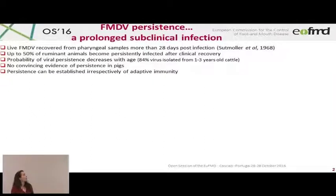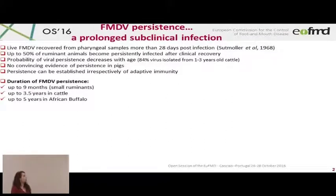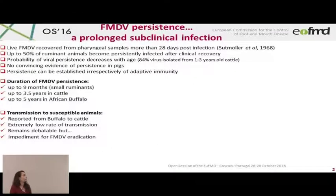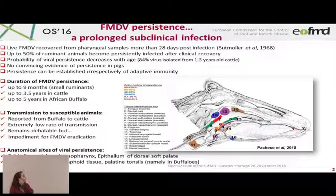The probability of viral persistence decreases with age. There is no convincing evidence of persistence in pigs, and persistence can be established irrespective of adaptive immunity. The duration of FMDV persistence depends on the species: up to five years in African buffalo, up to nine months in small ruminants, and three and a half years in cattle. Transmission to susceptible animals has been reported from buffalo to cattle at an extremely low rate, and this transmission remains debatable but is an impediment for FMDV eradication.